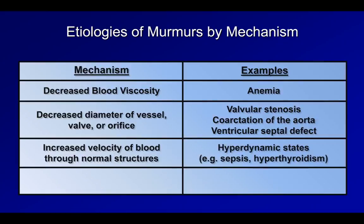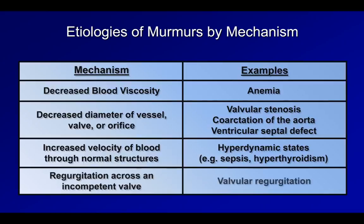Finally, a mechanism not previously mentioned is regurgitation across an incompetent valve. The turbulence caused by this is due to an abnormal morphology of the valve, which sets up eddies in the flow of blood that cannot be easily accounted for by Reynolds' number.